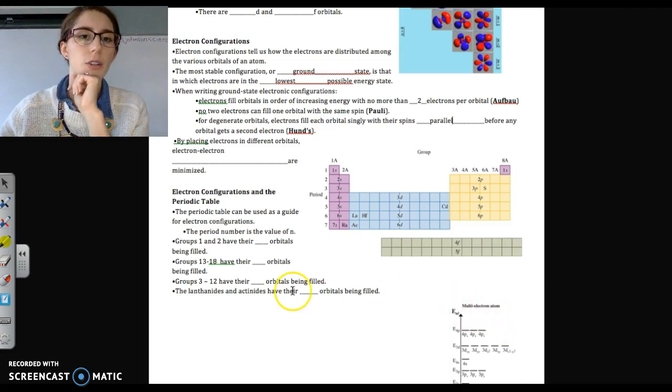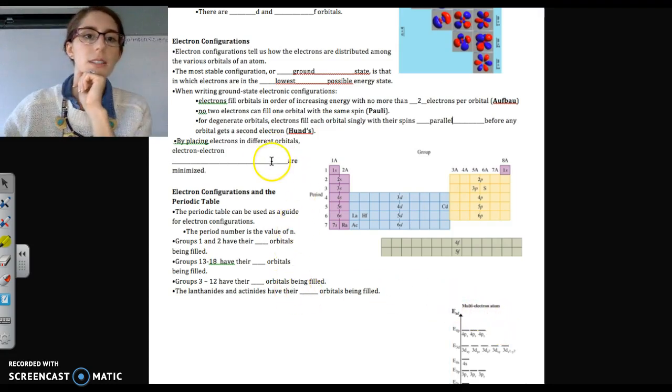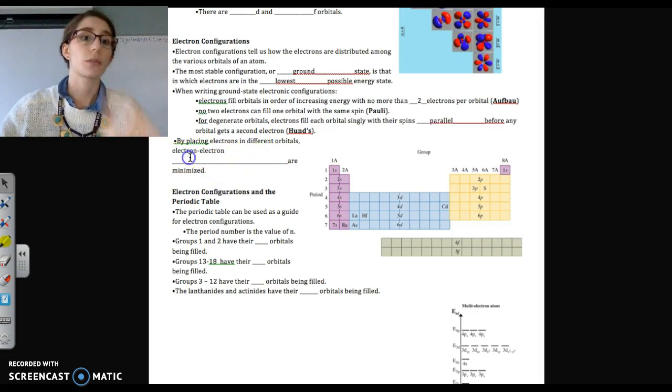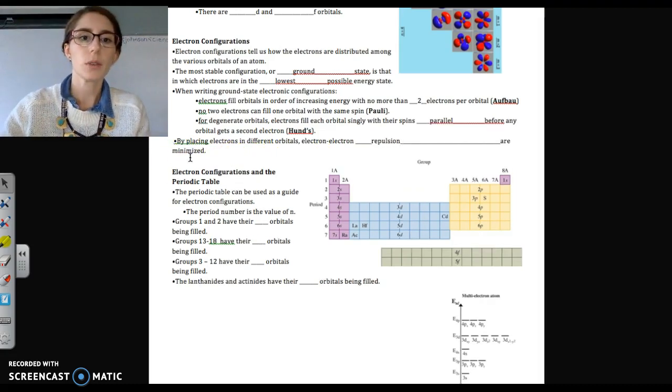And that's due to electron-electron repulsions. By placing electrons in different orbitals, electron-electron repulsions are minimized.